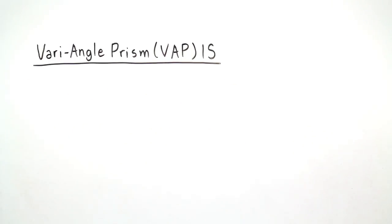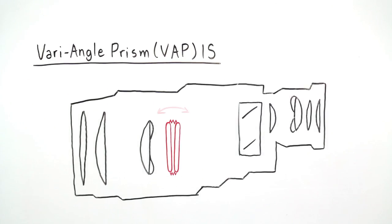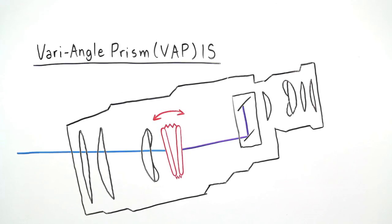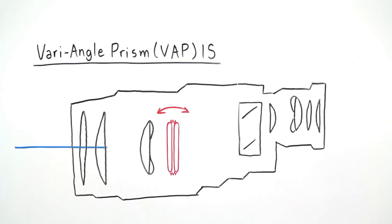With Vari-Angle Prism IS, the lens bellows change shape, adapting to the shake and stabilizing the image for an impressive and steady view.